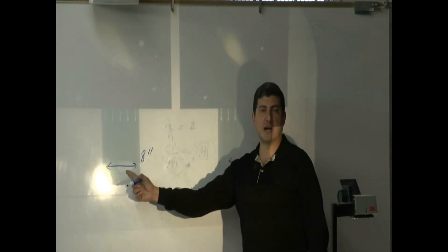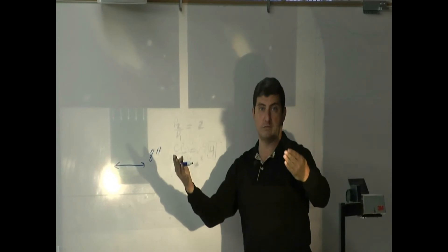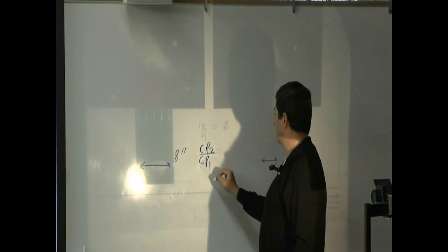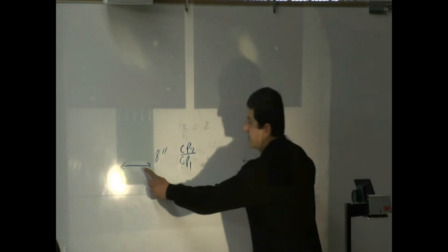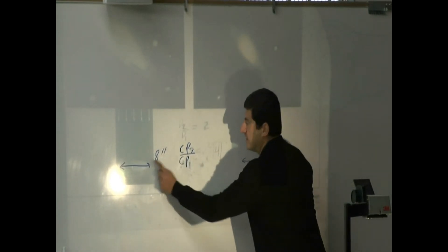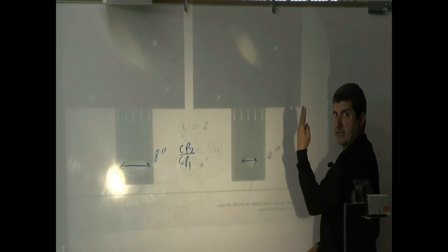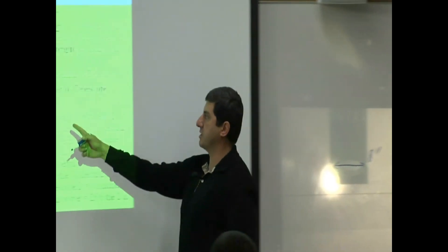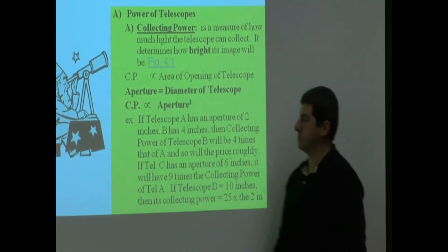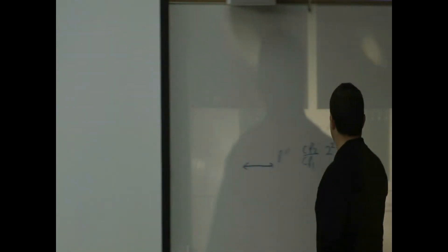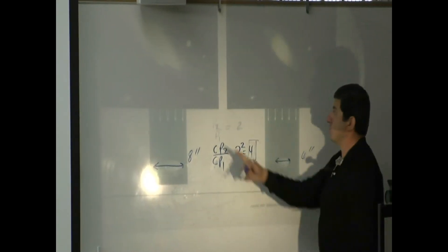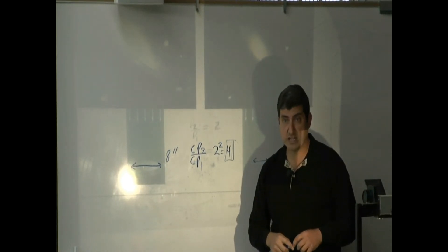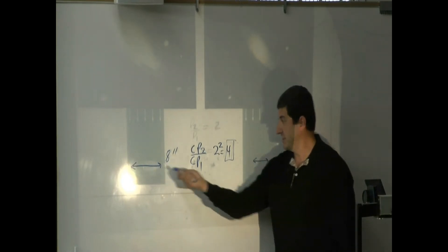How much more collecting power would that have? How many times more collecting power? The collecting power of that one divided by the collecting power of this one — what's the ratio of their diameters? It's twice bigger, so you do two squared. Why squared? Because the collecting power is proportional to aperture squared. So that's equal to four — this would have four times the collecting power. It might cost you about four times as much to purchase this versus this.